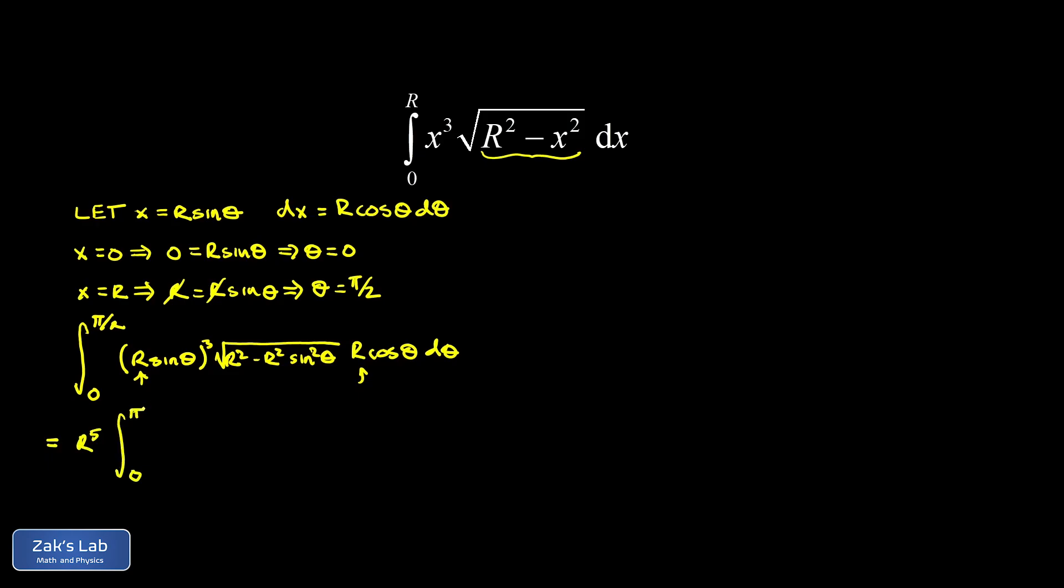And we have r to the fifth integral from 0 to pi over 2, and then I have a sine cubed theta. And in my square root, I have 1 minus sine squared theta, which is cosine squared theta. And when I take the square root, I just get cosine of theta. So we already took care of the r part of this, but this is also going to produce a cosine theta. So we put that together with the cosine theta at the end of the integral, and I end up with cosine squared theta.